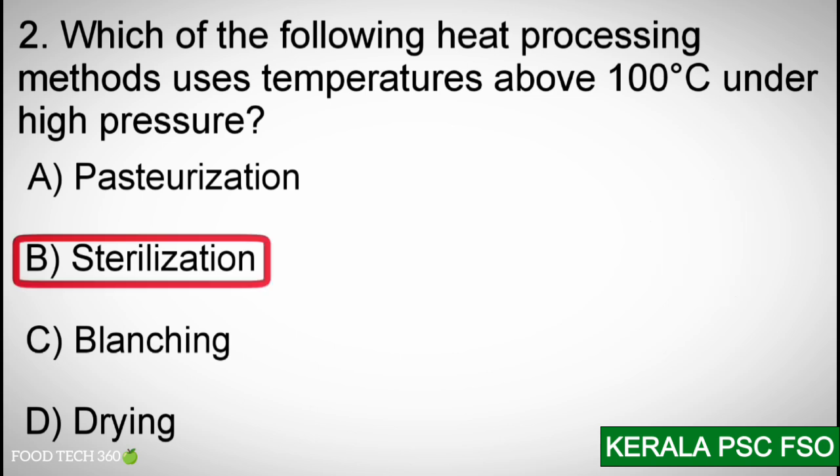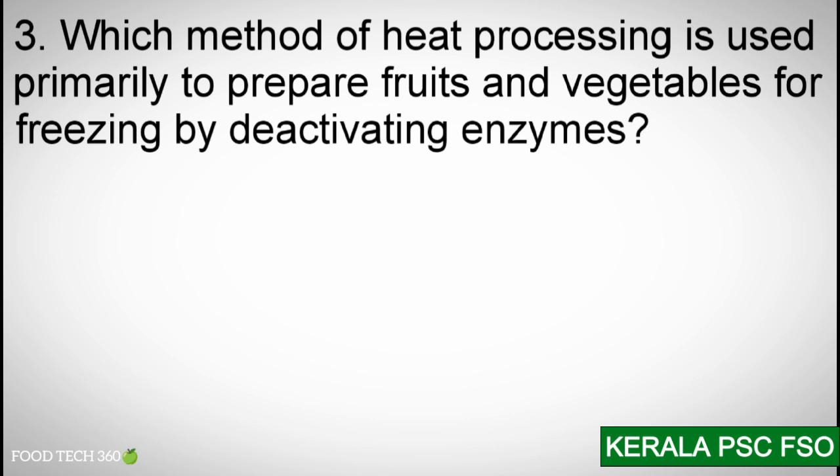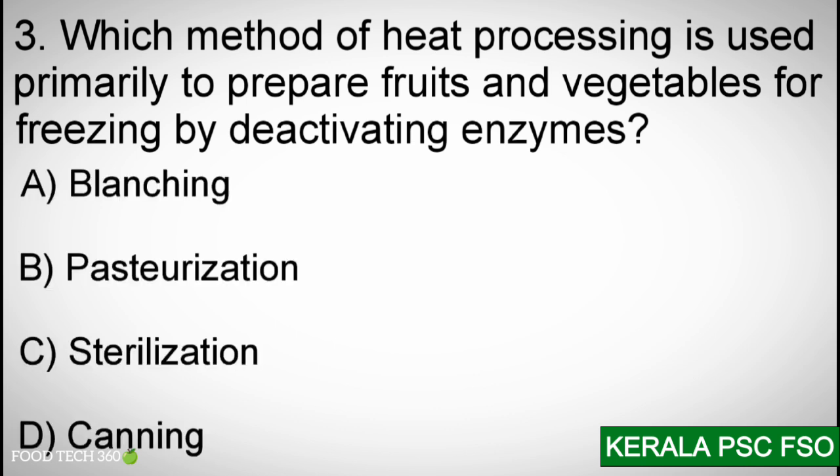Correct answer: B — Sterilization. Q3: Which method of heat processing is used primarily to prepare fruits and vegetables for freezing by deactivating enzymes? Options: A) Blanching, B) Pasteurization, C) Sterilization, D) Canning.